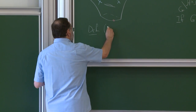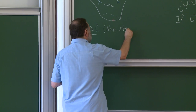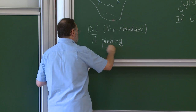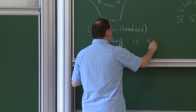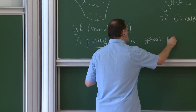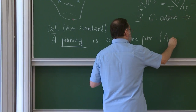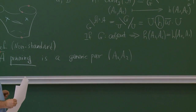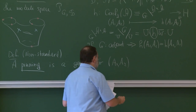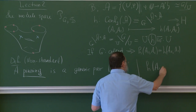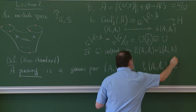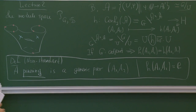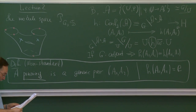Let me give a definition which is non-standard. A pinning is a generic pair of decorated flags A1 and A2. Generic means that this pair in the Bruhat decomposition corresponds to the maximal length element W0 in the Weyl group. Additionally, the H-distance between the two decorated flags is 1.